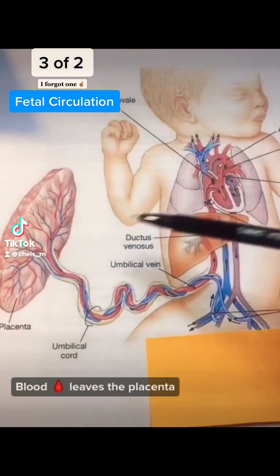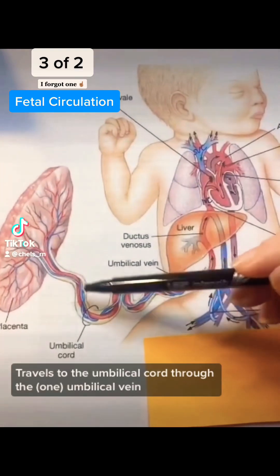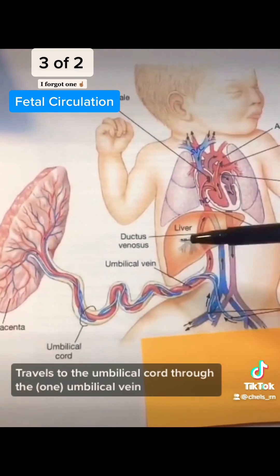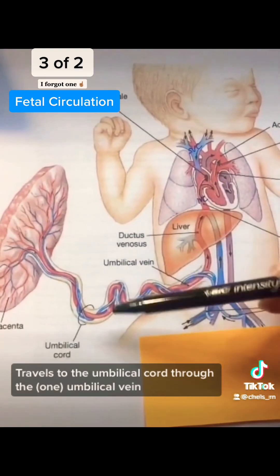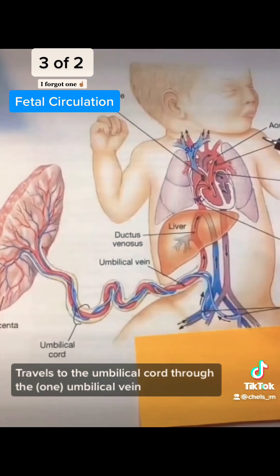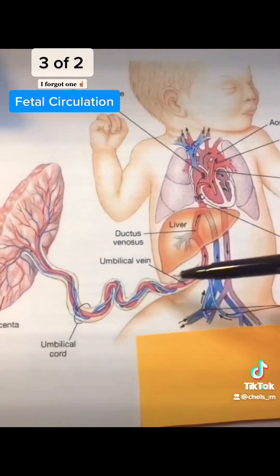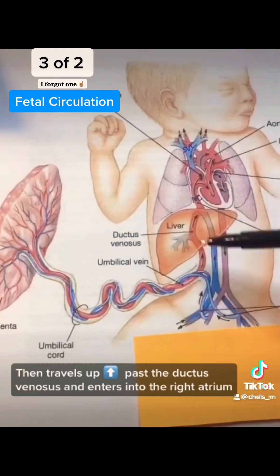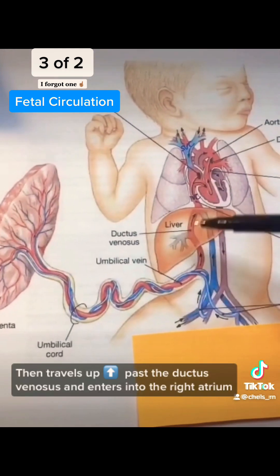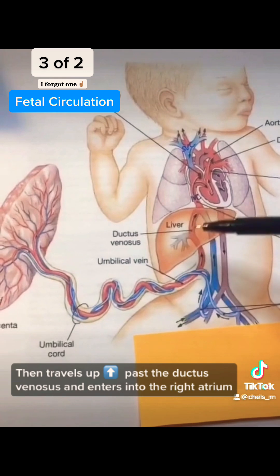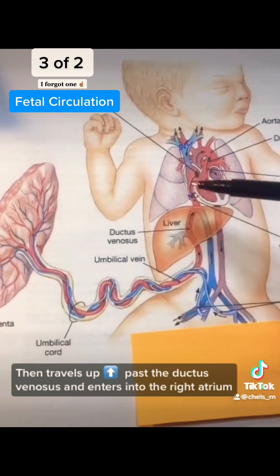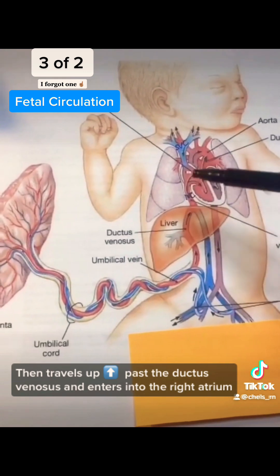Blood leaves the placenta, goes to the umbilical cord through the one umbilical vein, and travels up past the ductus venosus, and enters into the right atrium.